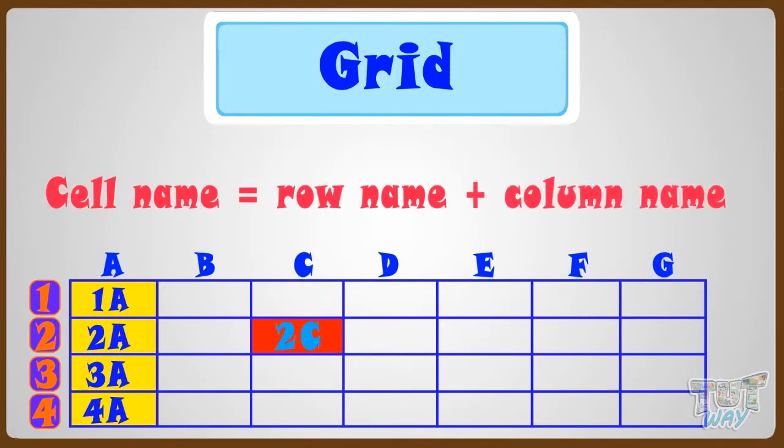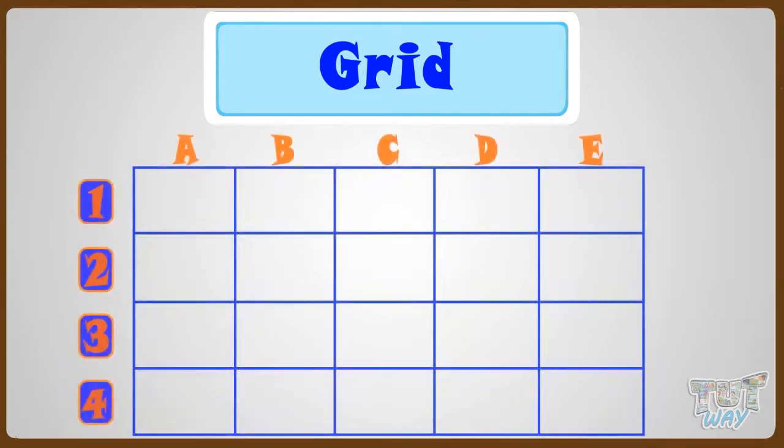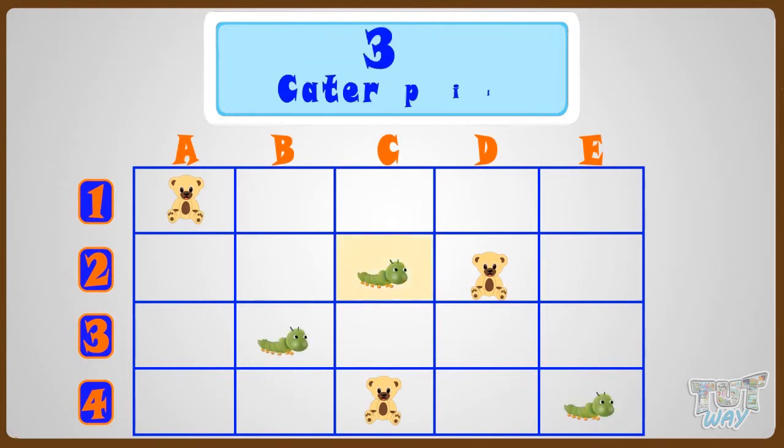Now let's learn more on grids. Now here we have a grid. Let's name the locations of all the toy caterpillars. There are 3 caterpillars. One caterpillar is at 2nd row, so 2, and column C, so its name will be 2C. So the position of first toy caterpillar is 2C.